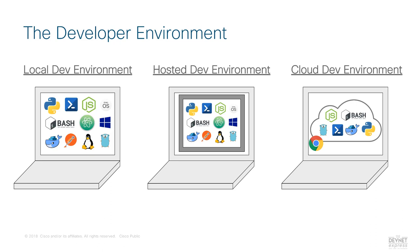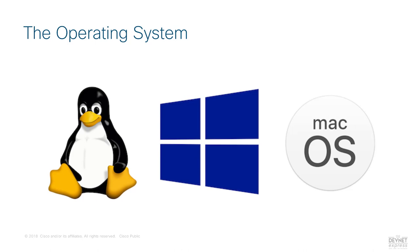Now that we have local, hosted, and cloud-based development explanations underway, let's figure out what you need in your own development environment to get started. As we're talking about running software, we need some sort of an operating system. The good news is that today the latest versions of Windows, Linux, and macOS can all be used as the foundation for a very usable and productive development environment. You don't have to feel limited to one platform or another.